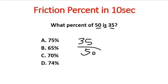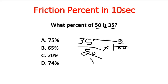So if we simplify, 35 over 50 reduces — multiplying through, 2 times 35 gives us 70. So the right answer is C: 70 percent.